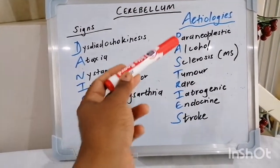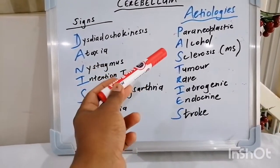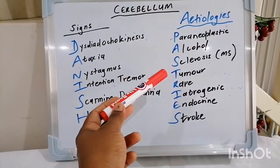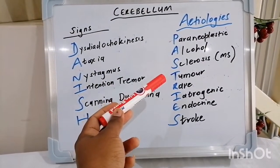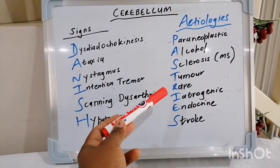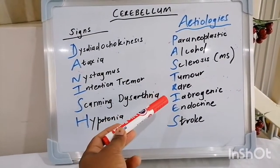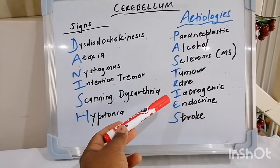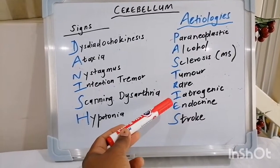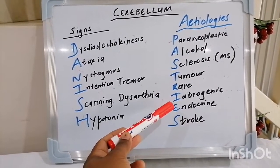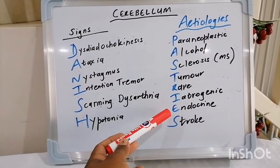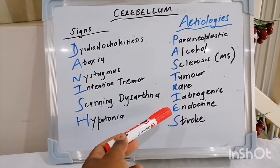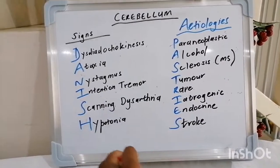Dysdiadochokinesia, dysmetria, ataxia, nystagmus, intention tremor, scanning dysarthria or staccato speech, and hypotonia or hyporeflexia. In terms of the etiologies — PASTRIES: paraneoplastic, alcoholic, multiple sclerosis, tumor, rare issues, iatrogenic issues like medications especially phenytoin and efavirenz, endocrine hypothyroidism, and stroke.